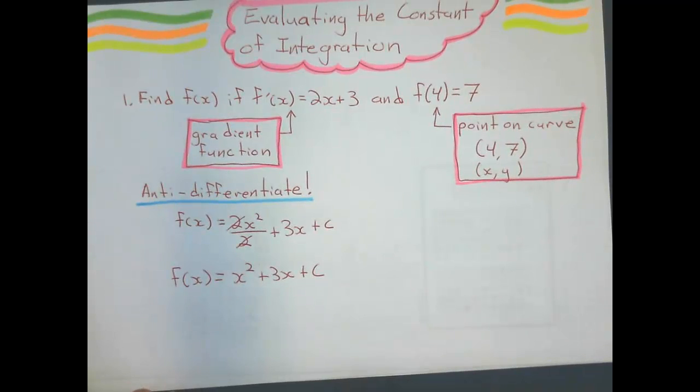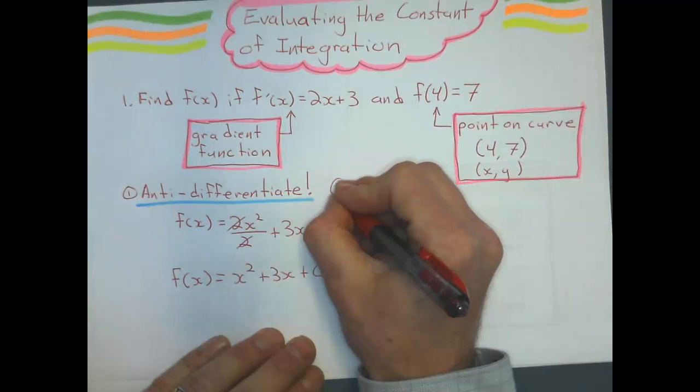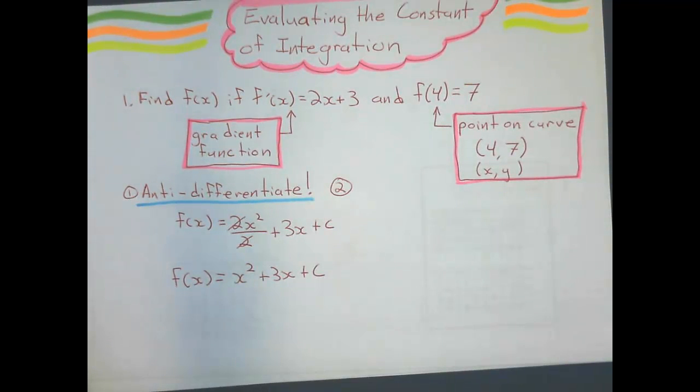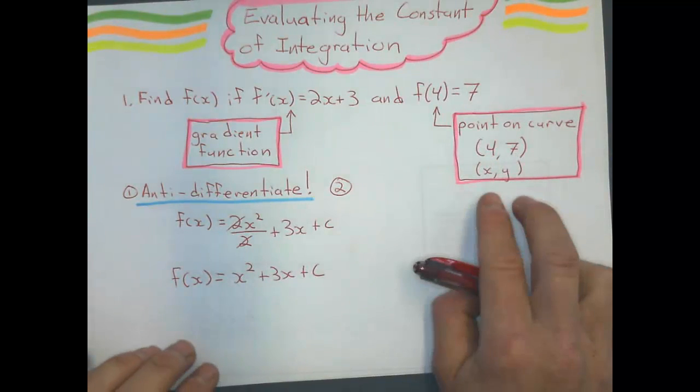That's our first step, to anti-differentiate it. If we can't do that, we can't do any of these. Our second step is to substitute these points in for x and y in order to solve for c.